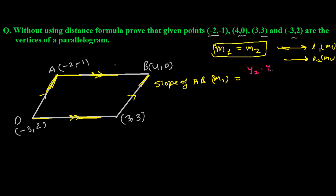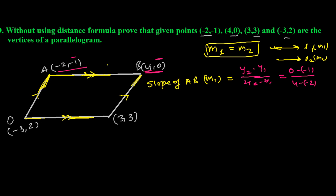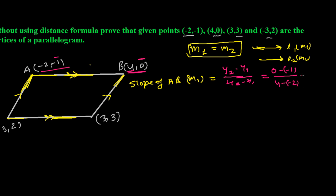The slope formula is the difference of y-coordinates over the difference of x-coordinates: (y2 - y1) / (x2 - x1). For AB with points (4, 0) and (-2, -1): y2 - y1 = 0 - (-1) = 1, and x2 - x1 = 4 - (-2) = 6. So slope of AB, m1 = 1/6.